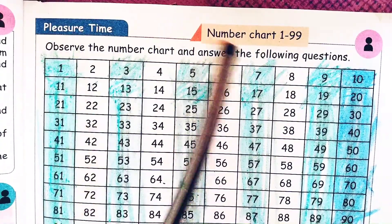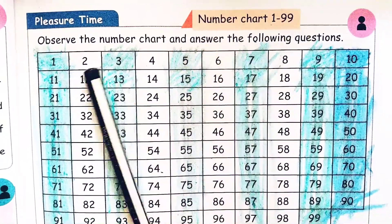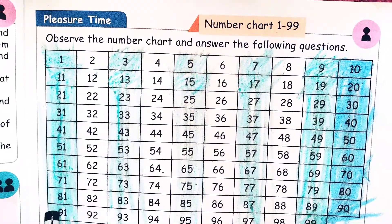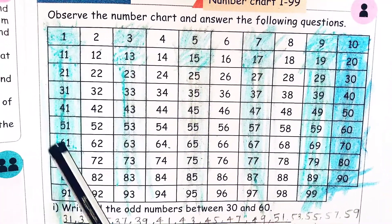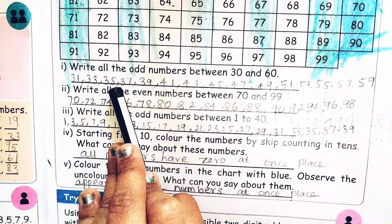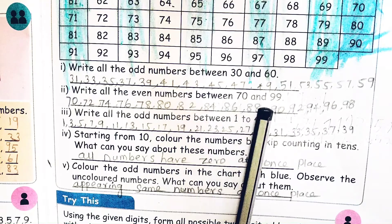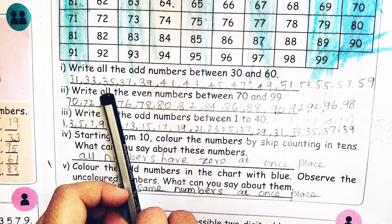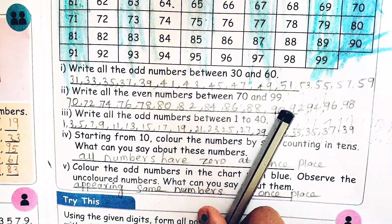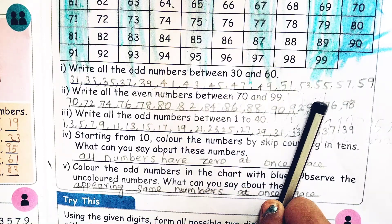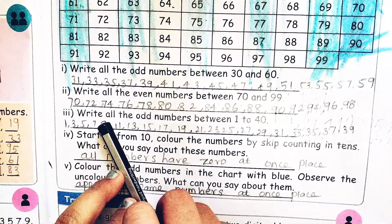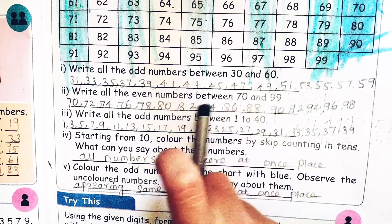Pleasure time — number chart 1 to 99. Observe the number chart and answer the following questions. Write all the odd numbers between 30 and 60: 31, 33, 35, 37, 39, 41, 43, 45, 47, 49, 51, 53, 55, 57, 59. Write all the even numbers between 70 and 99: 70, 72, 74, 76, 78, 80, 82, 84, 86, 88, 90, 92, 94, 96, 98.